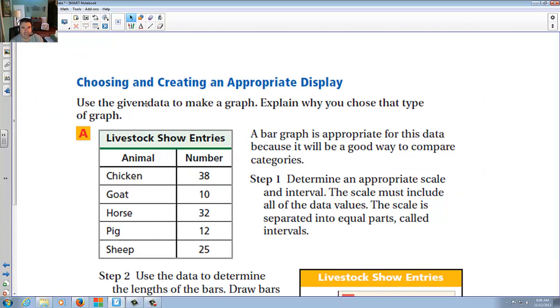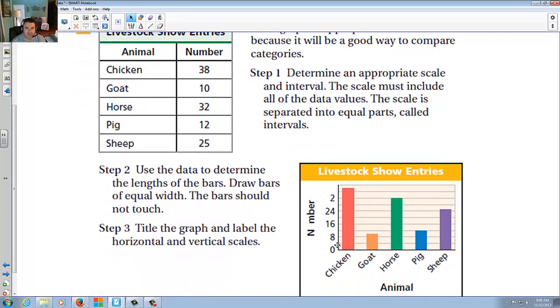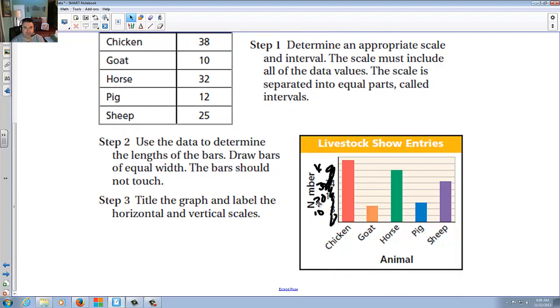Choosing and creating an appropriate display. Use the given data to make a graph to explain why you chose that type of graph. A bar graph is appropriate for this data because it would be a good way to compare categories. In other words, we have different things that we can put. Chicken, goat, horse, pig, sheep. And on the side, you would put, well, lowest number's ten, highest number's thirty-eight. I'd probably go ten, twenty, thirty, forty. That's what I would do. And here they did the same thing. They put chicken, goat, horse, pig, sheep. Now they went ahead and put zero, eight, sixteen, twenty-four, two. I'm not sure why they did that. I'm going to cross that out. I think that must have been a mistake in the book. Because I'm saying that you should put probably ten, twenty, thirty, and forty. And that would be the way I'd pull that off. And then just put the appropriate bars to it.